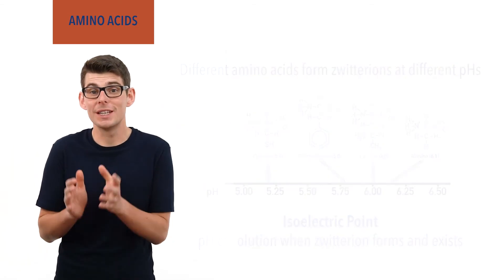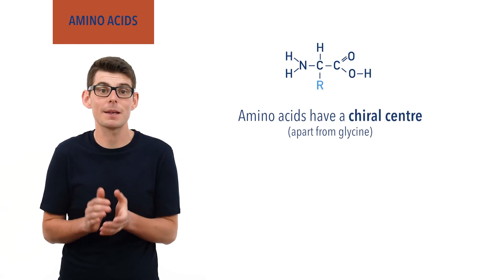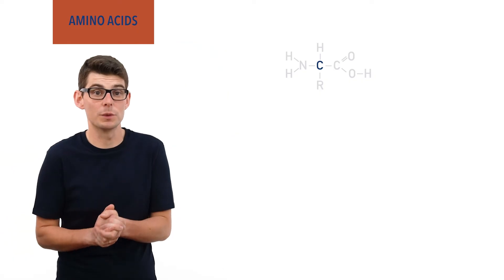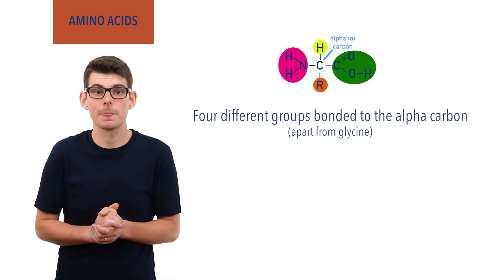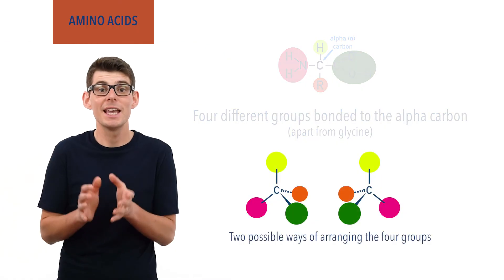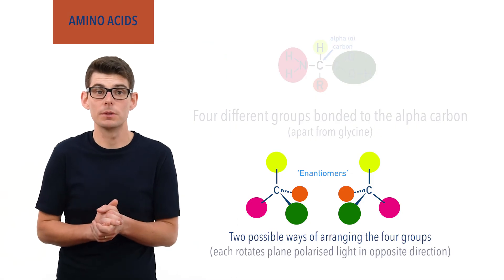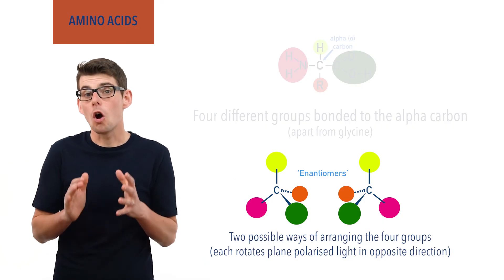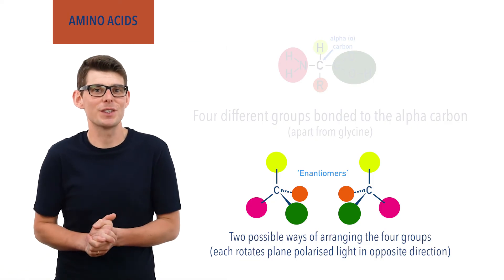As a final note, naturally occurring amino acids have a chiral center and can rotate monochromatic plane polarized light. This is because the central carbon — often referred to as the alpha carbon — has four different groups bonded to it, with the exception of glycine. This means there are two possible ways of arranging the groups bonded to it, each being an enantiomer that will rotate plane polarized light in opposite directions. As a result, naturally occurring amino acids are optically active. Optical isomerism has been covered in more detail at chemistrystudent.com — check the links in the description below.